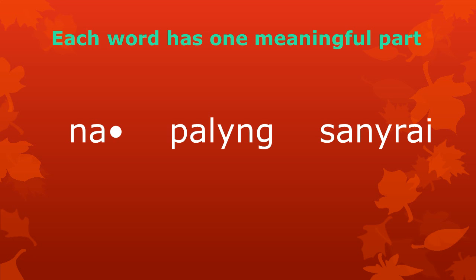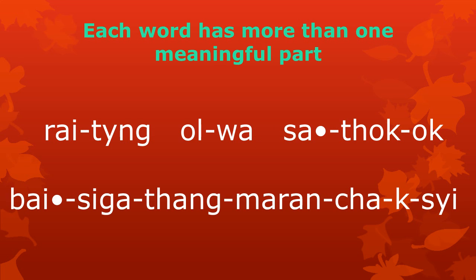In these examples, each word has just one meaningful part: na, baleng, sanrai. Here we see some words that have more than one meaningful part. To make this clear, the meaningful parts are separated by hyphens — those little lines.